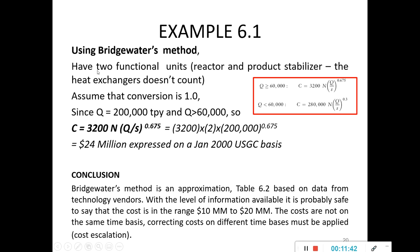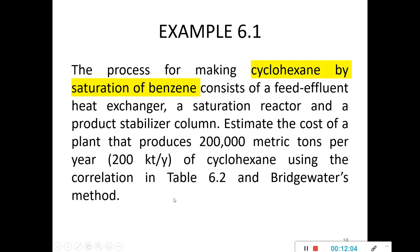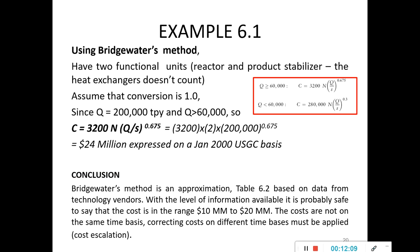Using the Bridgewater method for the same example, we have only two functional units: the reactor and the product stabilizer. The heat exchanger is not counted as it is not considered a substantial cost unless mentioned otherwise. Assume conversion is 1. Since Q is 200,000 metric tons per year, which is more than 60,000, we use the corresponding equation and substitute all values. With S equal to 1, we get 24 million expressed on a January 2000 USD basis. This is the correct way to write cost estimates — always include the year basis.